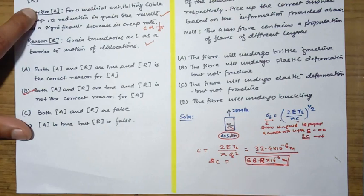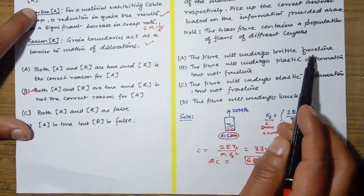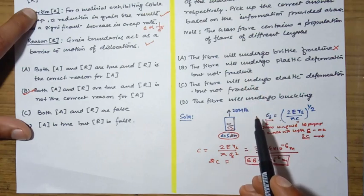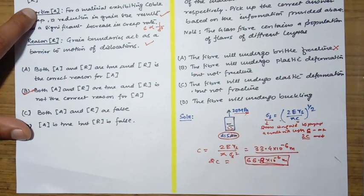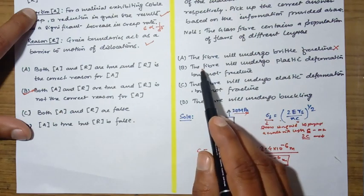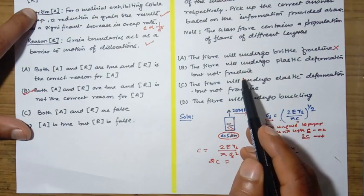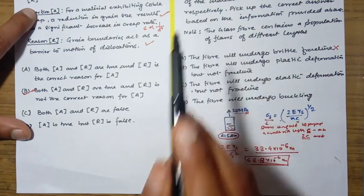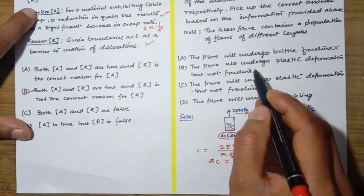Now let us come to the options. The fiber will undergo brittle fracture - it's not correct. Fiber will not undergo brittle fracture because the crack size will be very small so that this 20 MPa will be able to move this crack. Second option: the fiber will undergo plastic deformation but not fracture. This fiber will not undergo plastic deformation also because this is a glass fiber and glass fiber is of brittle material, so this is also incorrect.